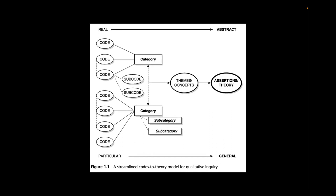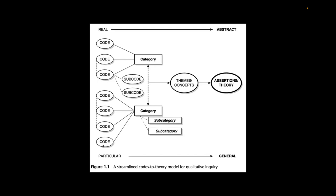We move from the real to the abstract. Just like the thirsty crow story yielded the abstract theme 'necessity is the mother of invention,' in qualitative research we start with quotes from real interviews and focus groups, develop subcodes, then categories, subcategories, concepts, themes, and finally theories. This shows how a theory can be developed from quotes — moving from the particular toward the general.